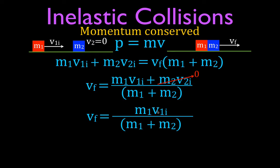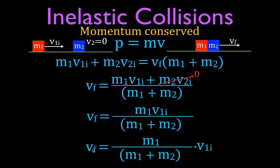We can pull out V1 initial, and the final velocity equals (M1 divided by M1 + M2) times V1 initial. The general equation works when both objects are moving; the simplified version applies when one object is stationary before the collision.